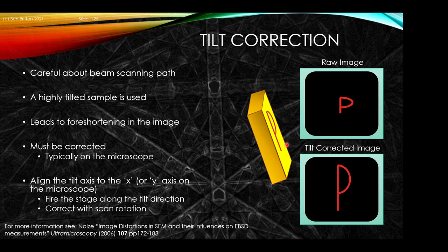The tilt correction is very important with regards to the scanning path, the highly tilted geometry, and the foreshortening corrections. You typically do the correction on the microscope — do check this. Effectively verify that if you're reproducing your sample it looks like you imagine it being flat. Try to align the tilt axis so the most true axis of your sample is along the tilt configuration and correct with the scan rotation. There are discussions on this in the true EBSD paper mentioned previously, but also in the NOLSA paper which covers some of the distortions present in the imaging modes.